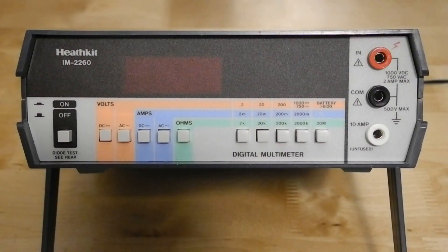Voltage ranges are 2, 20, 200, and 1000 volts. Current ranges are 2 milliamps, 20 milliamps, 200 milliamps, 2 amps, and 10 amps.